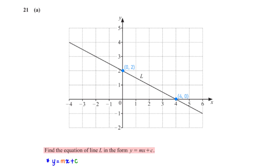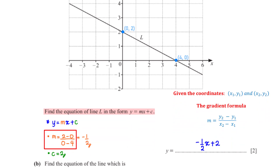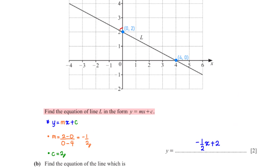Find the equation of line L in the form y = mx + c. Pick two points on the line and apply the gradient formula: (2 − 0) ÷ (0 − 4) = −1/2. The y-intercept is 2. So the equation is y = −½x + 2.